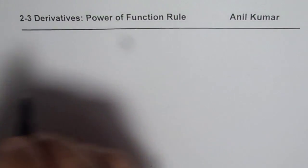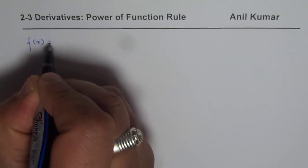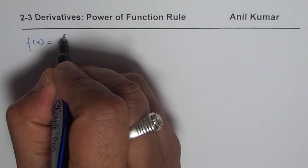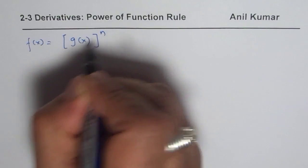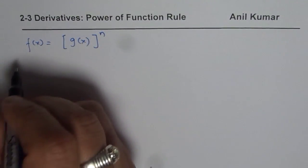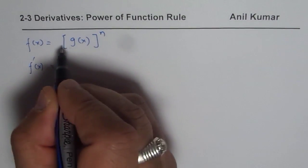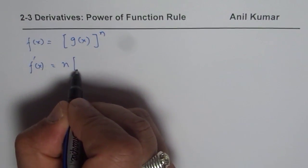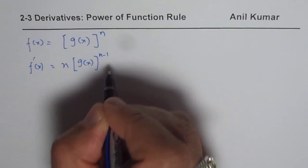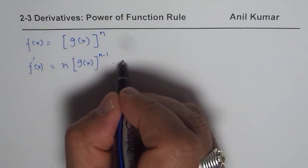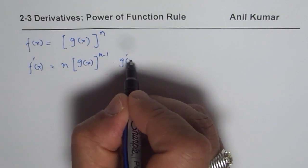There are two different notations with which we are working. One of them is f of x equals to g of x. Let's say we have a power rule here, so there is another function of x to the power of n. We need to find the derivative of this function. The rule is: the derivative is n times g of x to the power of n minus 1, times the derivative of the inside function.